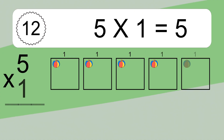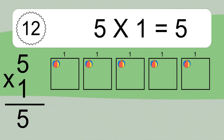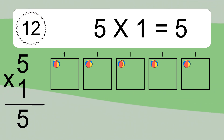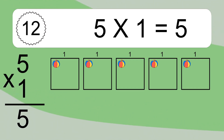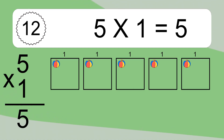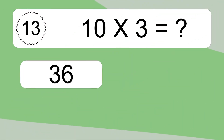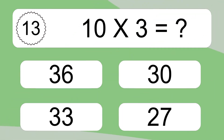5 times 1 equals 5. We have 5 boxes and each box has 1 colorful ball inside. If you count all the balls in all the boxes together, you will have 5 times 1 balls. This equals 5 balls. 10 times 3 equals what?